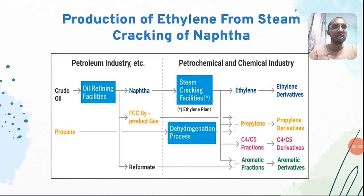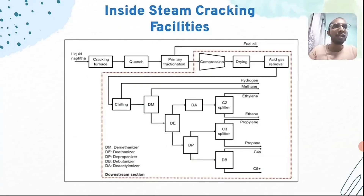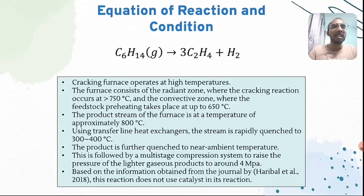Moving on to the production of ethylene from steam cracking of naphtha, this is the general process flow diagram. Naphtha, refined from crude oil, enters the steam cracking facility to produce ethylene. The steam cracking facility is divided into three main sections: the hot section which includes the furnace, primary fractionator and quench; the compression section which consists of the compressor and dryers; and the cold section. The reaction equation and some operating conditions are also shown, with the furnace consisting of two zones: the radiant zone and the convective zone.